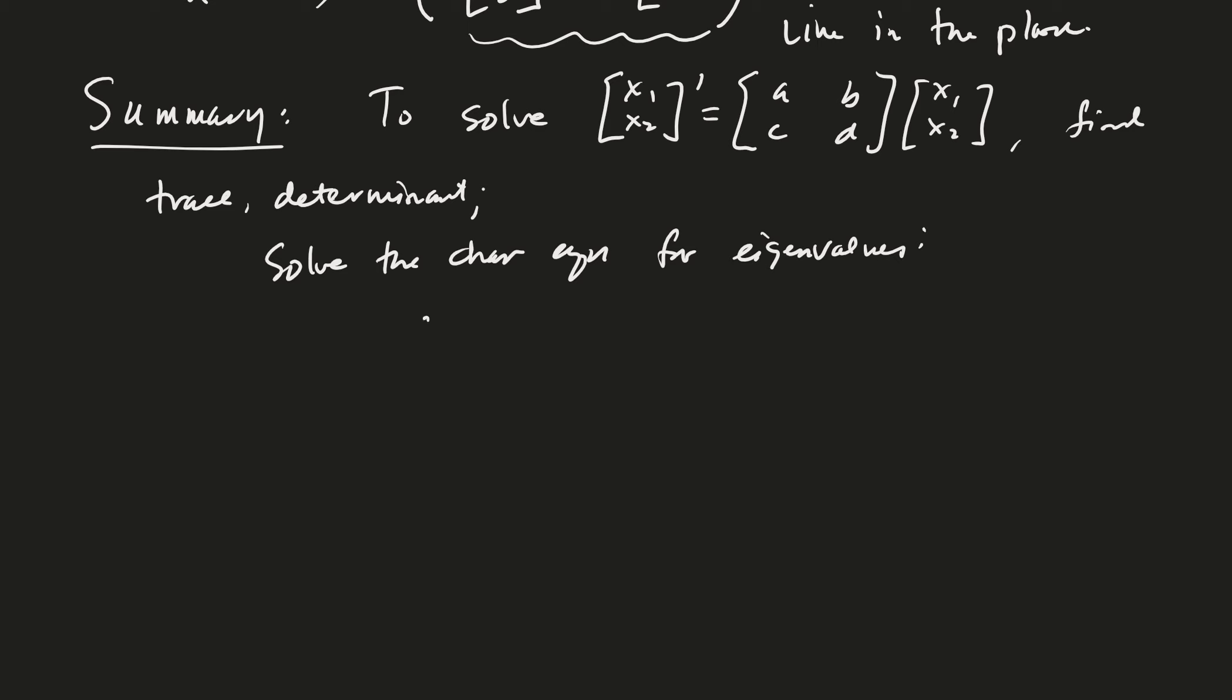And that is a minus lambda, b, c, d minus lambda, which we know is lambda squared minus the trace of a times lambda plus the determinant of a equals 0. Good. Alright. And so, case 1 is where we start. The discriminant. Should we write down what the discriminant is? It's the trace of a squared minus 4 times the determinant of a. Okay. If that's positive,